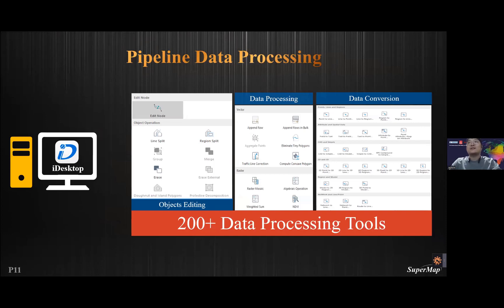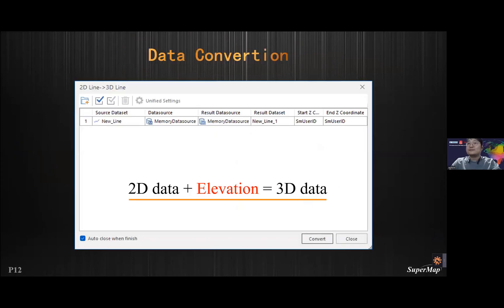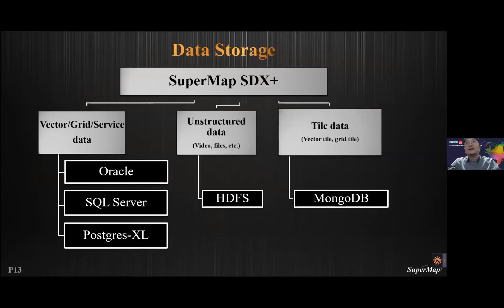We can convert a 2D line to a 3D line by adding an elevation field, and there are rich storage engines to choose from. SuperMap SDX Plus is a powerful spatial data storage engine which can help us store spatial data in different databases, such as Oracle, SQL Server, and PostgreSQL, which are good at storing vector, grid, and service data.